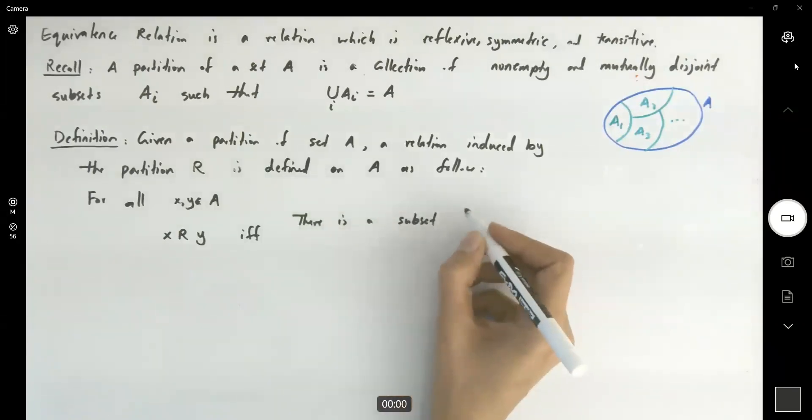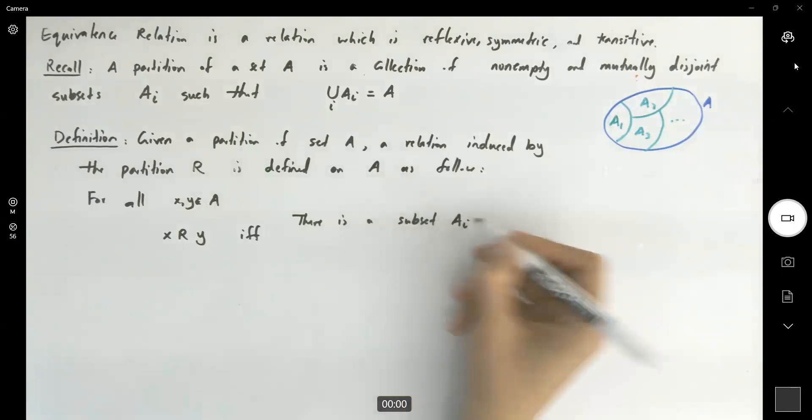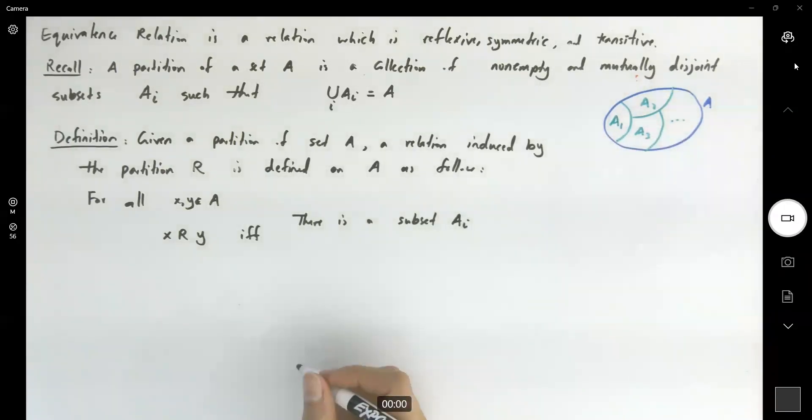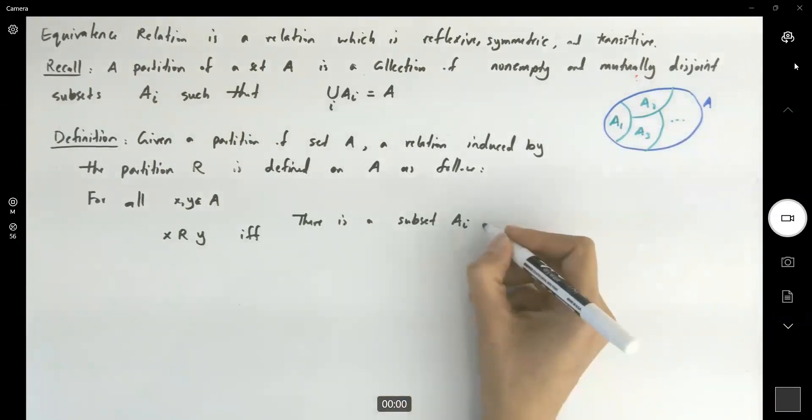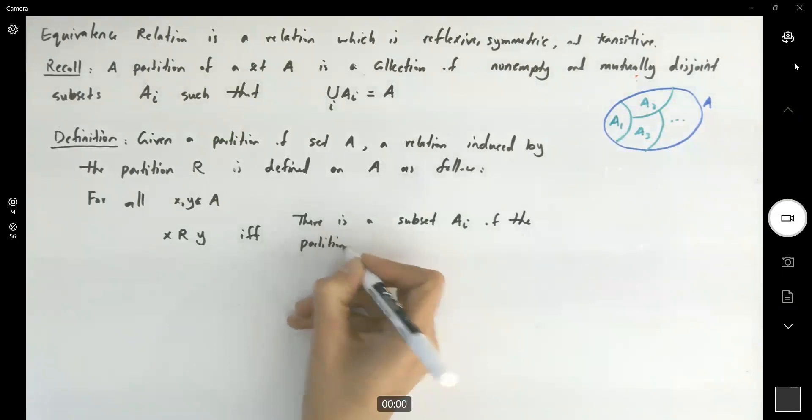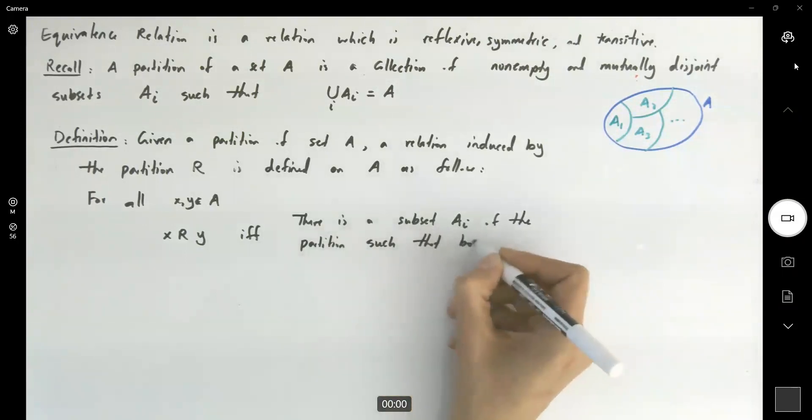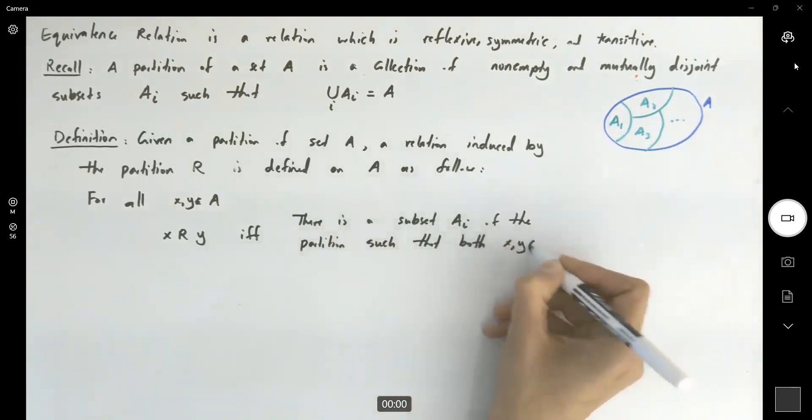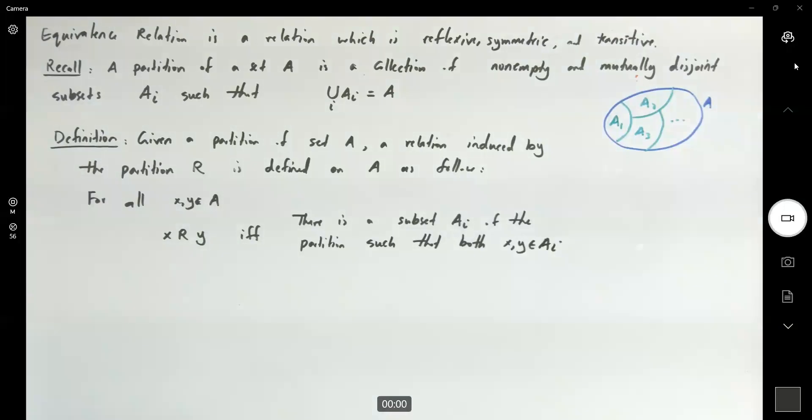X is related to Y if and only if there is a subset like A sub I, one of these partitions, such that both X and Y are members of that subset.